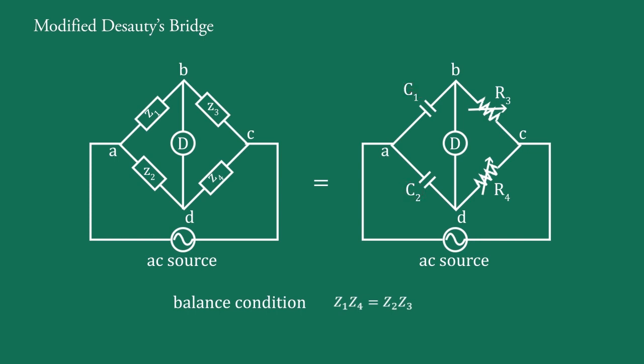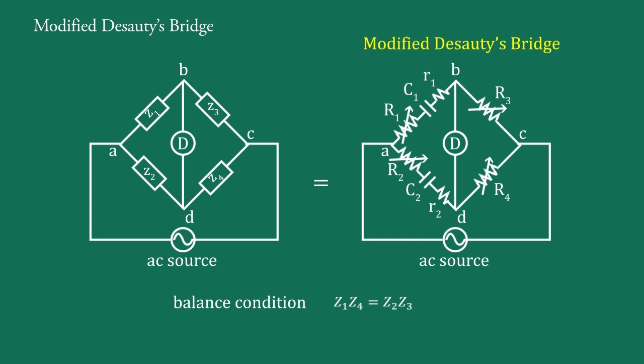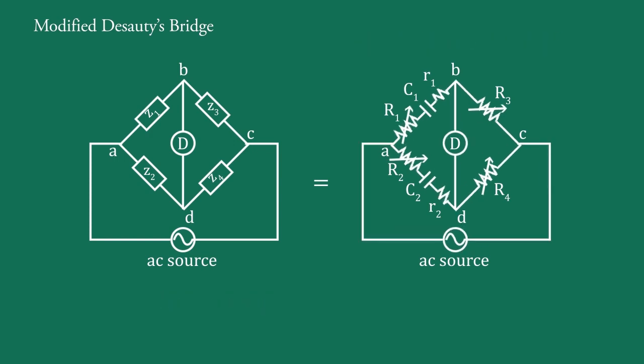If we take C1 and C2 as imperfect, then their internal resistances are R1 and R2 respectively. With resistances R1 and R2 connected in series with them, the resultant bridge is known as the modified Dissotis bridge. This bridge is used to measure capacitance C1 in terms of capacitance C2 and resistances R3 and R4.